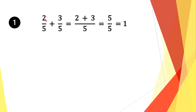We have a fraction two-fifths plus three-fifths, and we have a common denominator in both of these fractions. So we take a common factor of 5. 5 divided by 5 equals 1, and 1 times 2 is 2. We bring along the plus sign, then do the same thing for the second fraction. 5 divided by 5 is 1, and 1 times 3 is 3. So we add the numerators: 2 plus 3 is 5. We bring along the denominator 5, and 5 divided by 5 is 1. So our solution is 1.